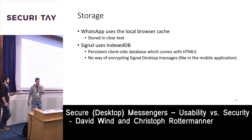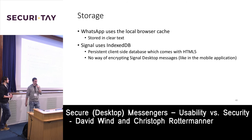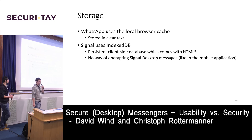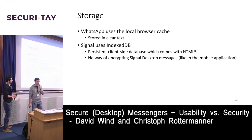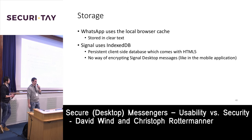The last point is about storage. WhatsApp Web uses the local browser cache and stores all data in cleartext. Signal uses IndexedDB, introduced in HTML5. For Signal Mobile you can encrypt all messages, but this feature isn't available for Signal Desktop, so all messages are stored plainly on your local disk. There is no implementation yet to easily encrypt this data in IndexedDB.